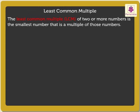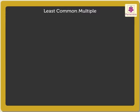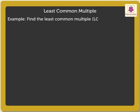To understand it in a better way, let us solve an example. Find the least common multiple of 5 and 10.